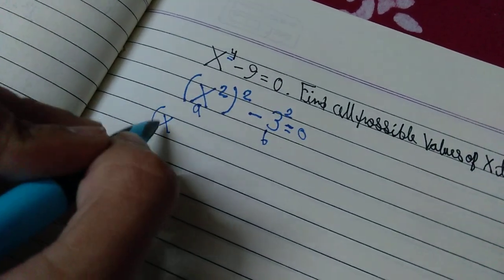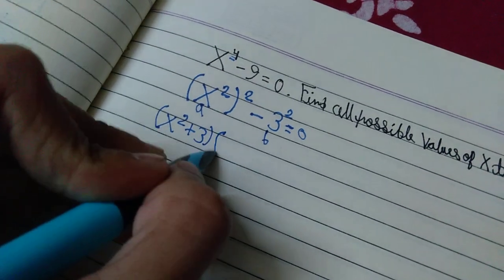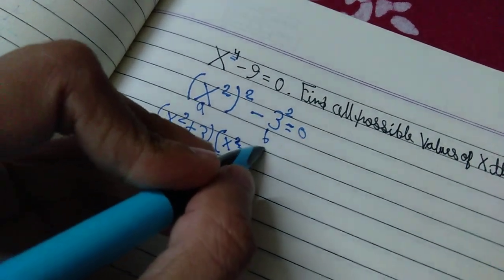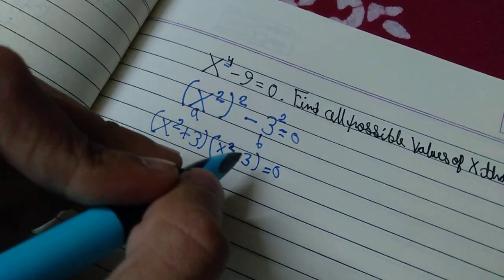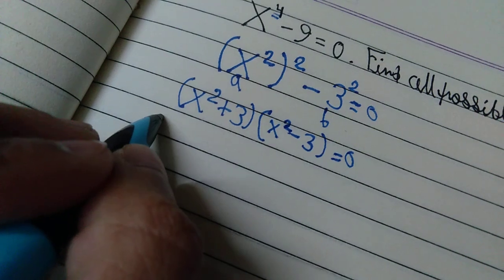just x squared plus 3 times x squared minus 3, and all of that is equated to 0. Now when x